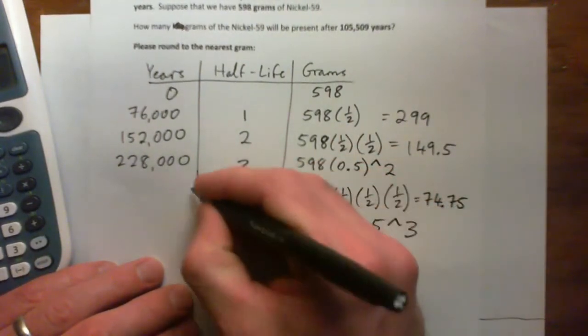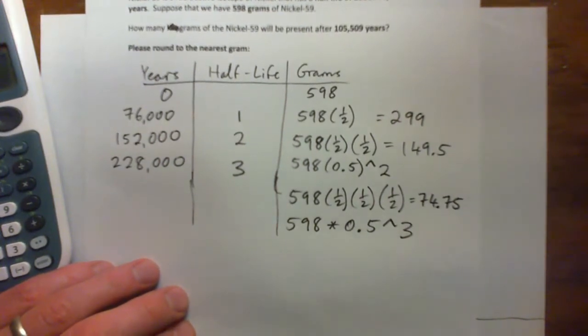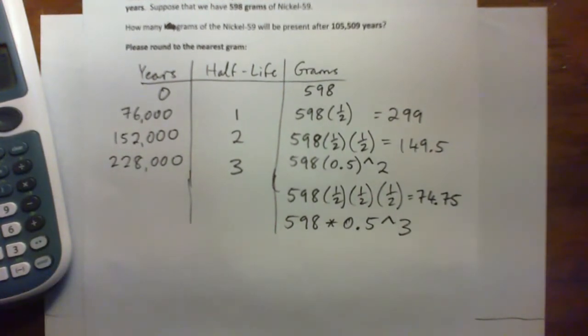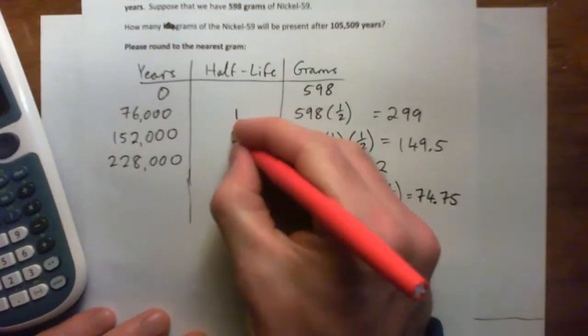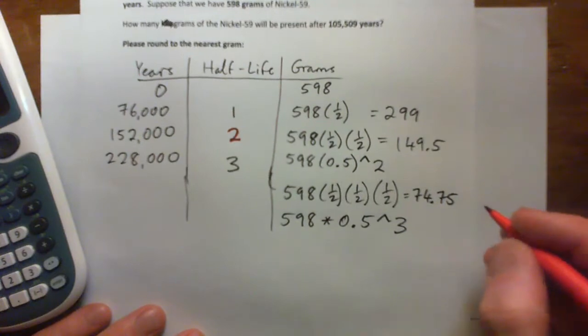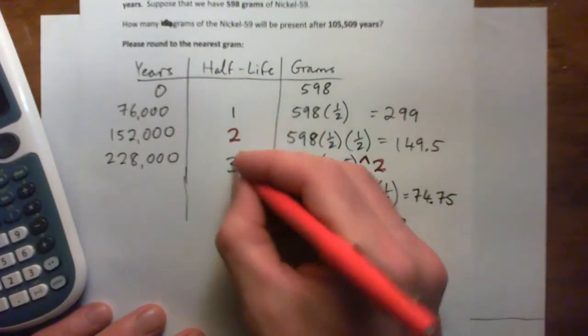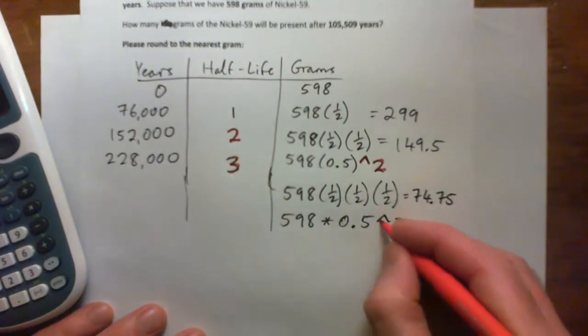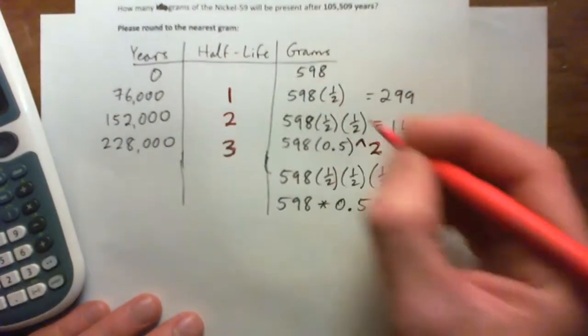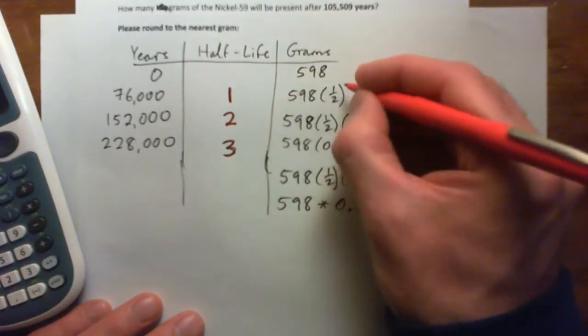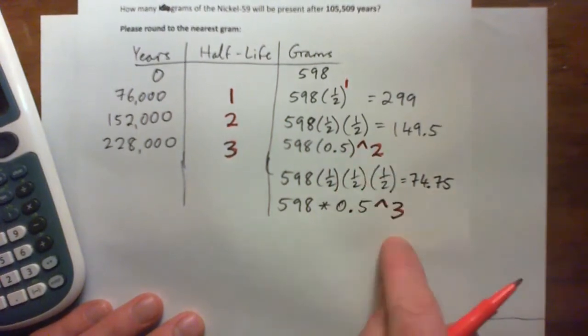Because you might notice that when we have two half-lives to figure out, it's to the power of 2. That's the exponent. When we have three half-lives to figure out, it's to the power of 3. Look at that in the formula. When you just have one half-life to figure out, it's 598 times a half to the power of 1. This is just a calculator way of writing powers.